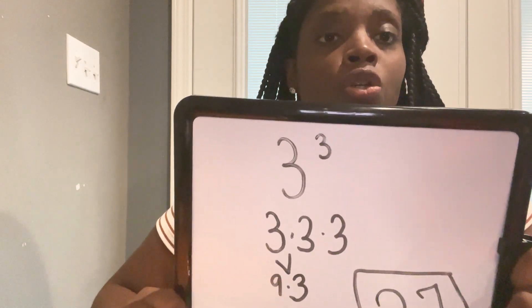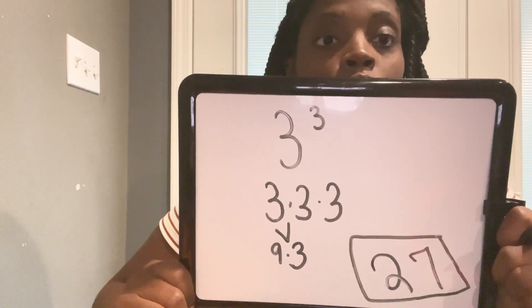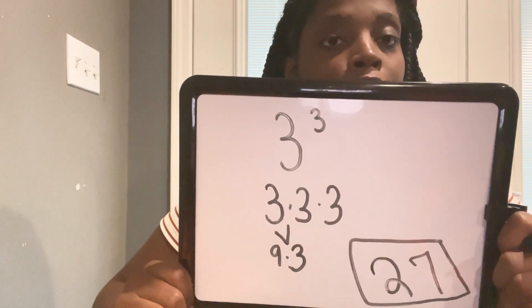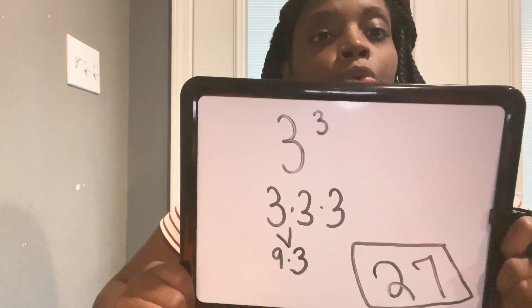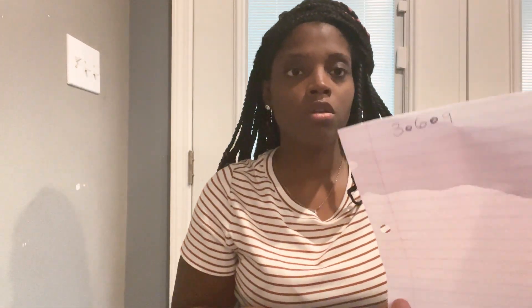I'm going to give you guys a couple of seconds because we're going to solve them together. Three to the third — that's three times three times three. You solve the first three times three and you get nine, and then you solve the last three and you get 27. That's how you solve it — it's basically multiplying three times three times three to get 27.